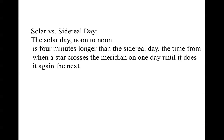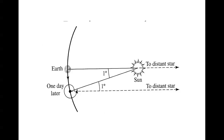The solar day is defined as the time from noon to the next noon — from when the sun crosses the meridian to when the sun next crosses the meridian. This day is four minutes longer than the sidereal day, the time from when a star crosses the meridian on one day until it crosses again the next. What is responsible for this difference in the amount of time? That we can see in the next illustration.